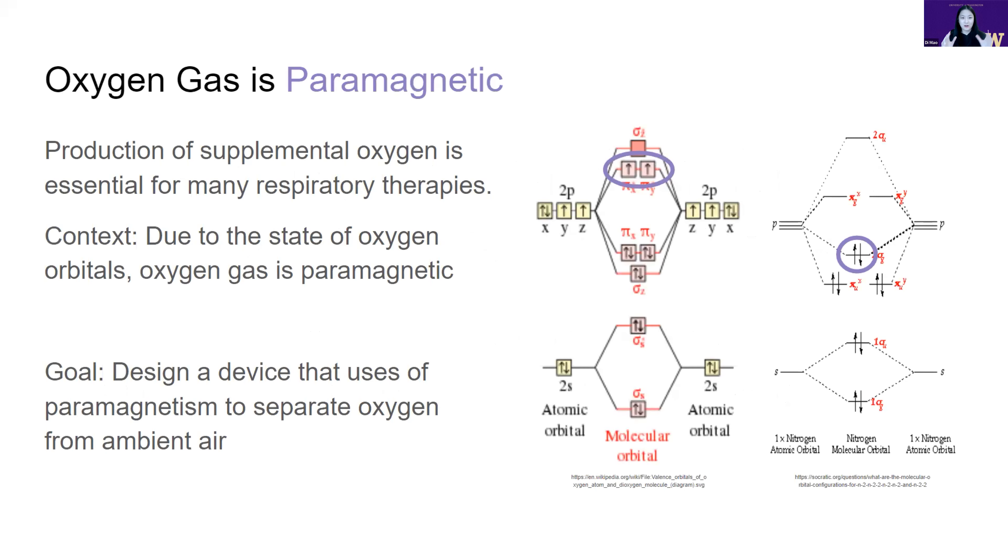Our entire design is rooted in the fact that oxygen gas is paramagnetic. As you can see on the right, this means that oxygen is attracted to magnets while other molecules in air, such as nitrogen, don't have that property. Because of this, our goal is to design a device that uses this paramagnetism to separate oxygen from ambient air.